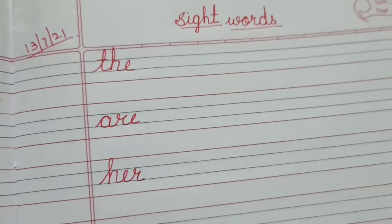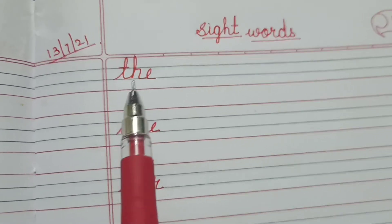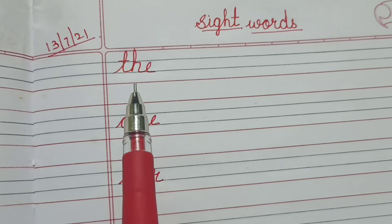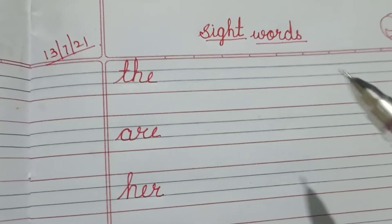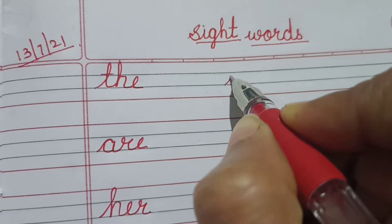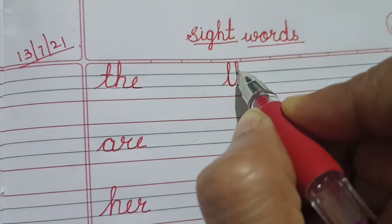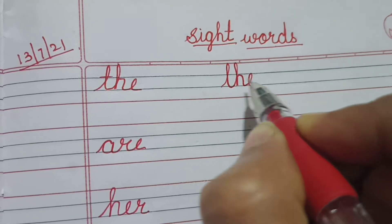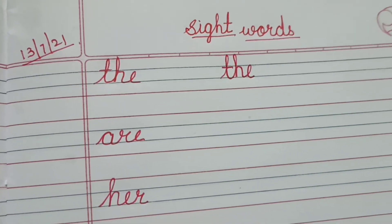Now you can see the sight words. The first one we will start is T-H-E-D-O. You have to repeat after me as well as you have to write it. T-H-E-D-O. T-H-E-D-O.